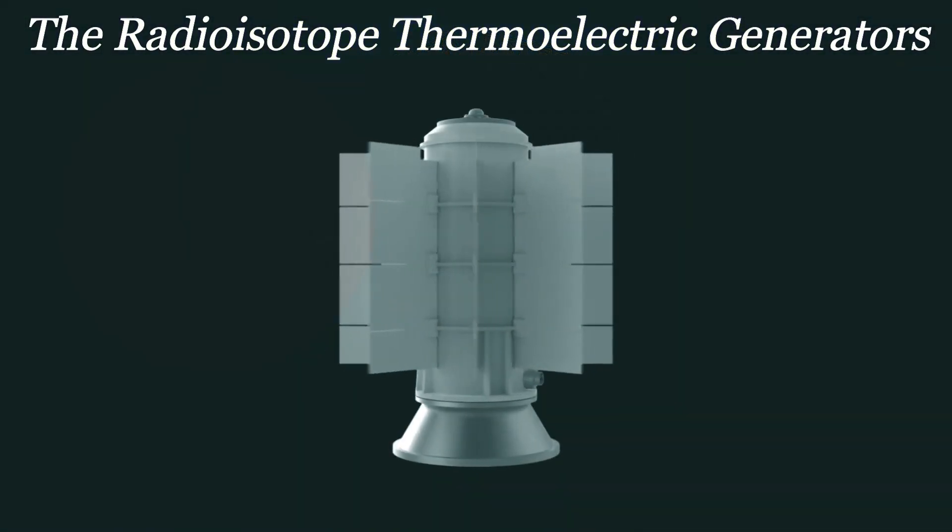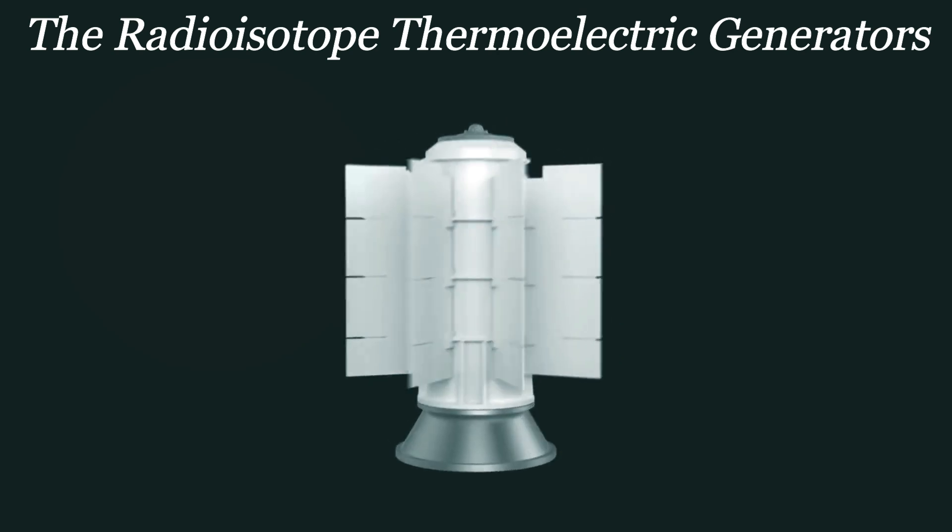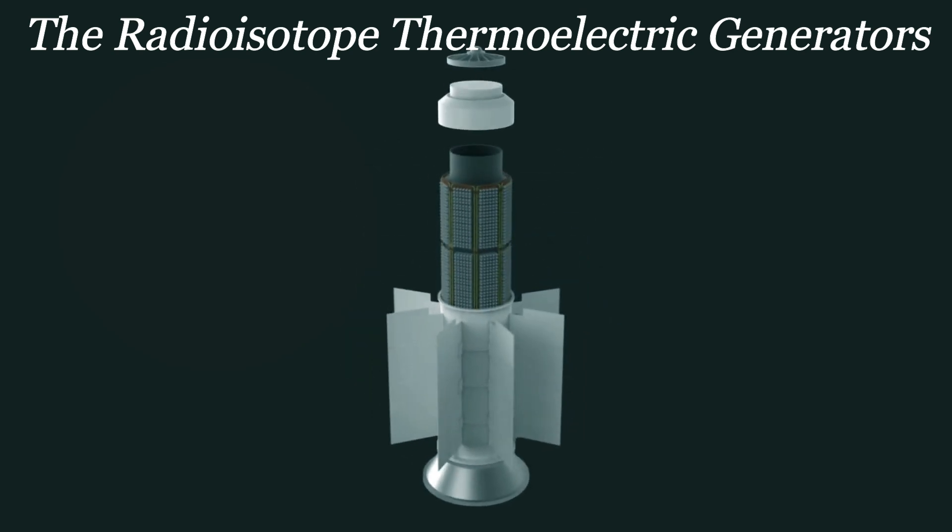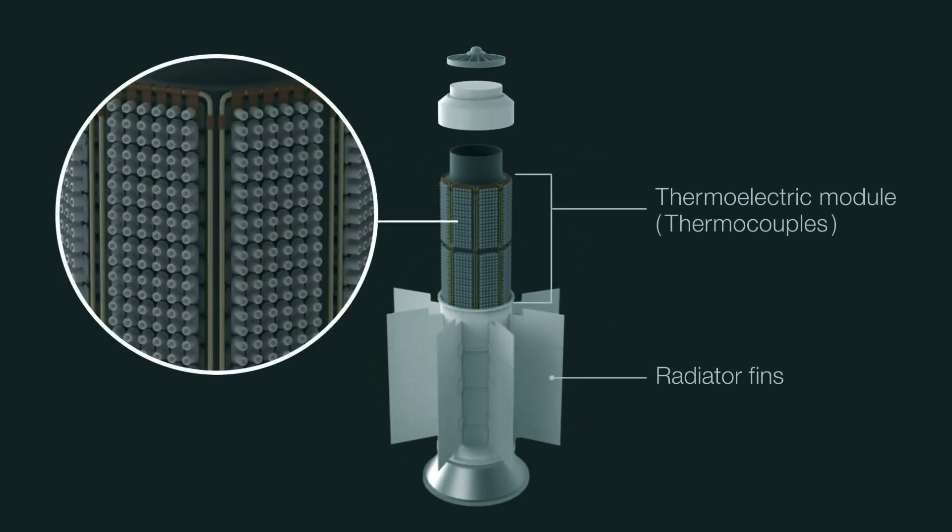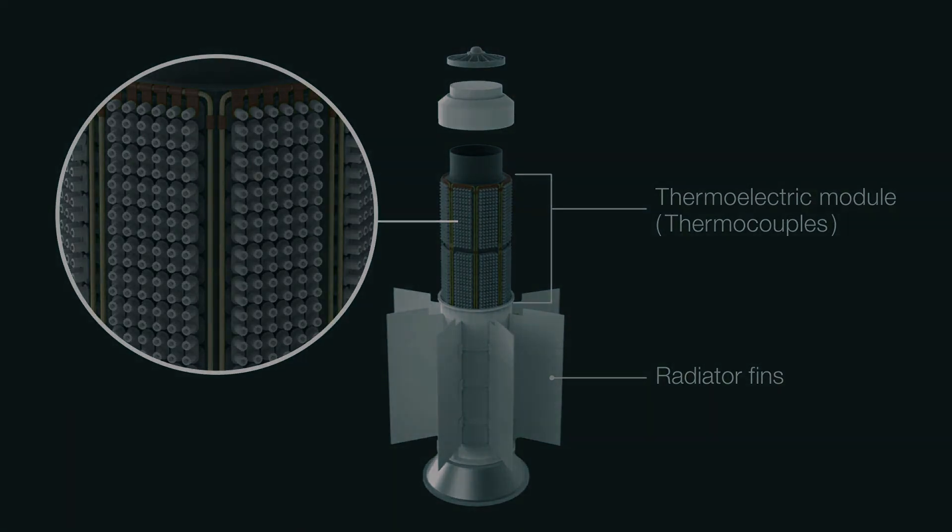Seebeck used copper and bismuth in his experiments. In the RTGs, the hot side is provided by the heat energy emitted from the natural radioactive decay of plutonium dioxide.